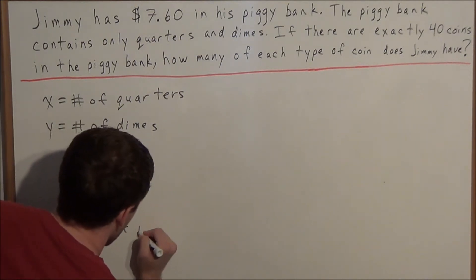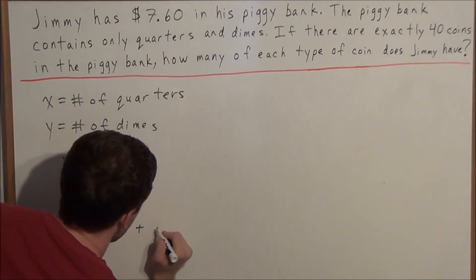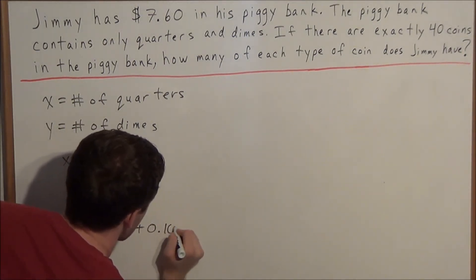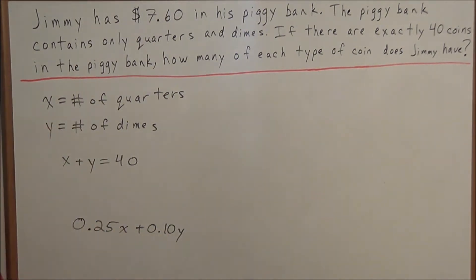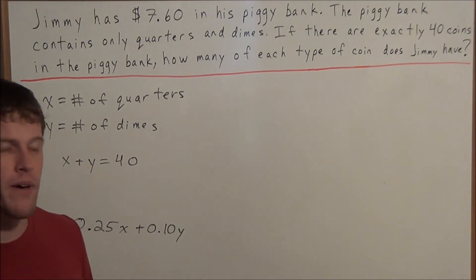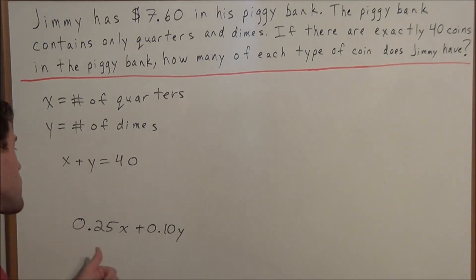And we're going to add 0.10 times y. Now 0.10 times y is going to represent all the money that he has in dimes. Since a dime is worth 10 cents, we would have 0.10 times the number of dimes to give us the total amount of money he has. The logic follows just as it did before when we had 0.25 times x.